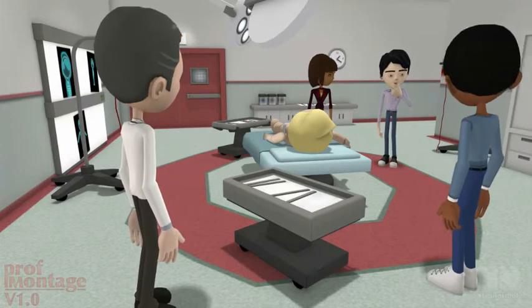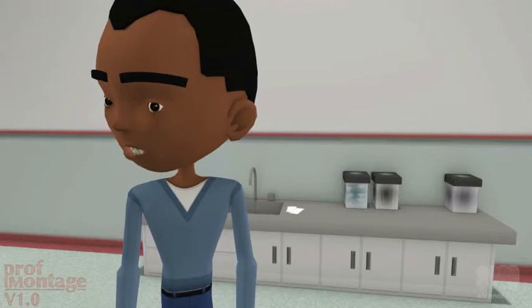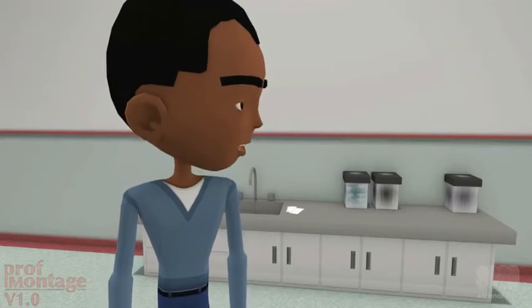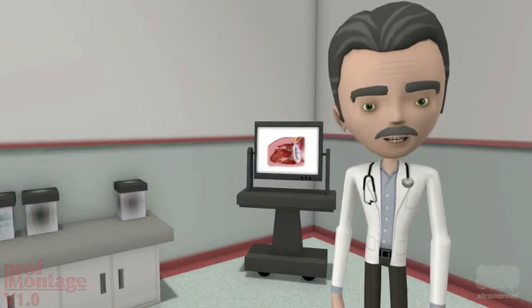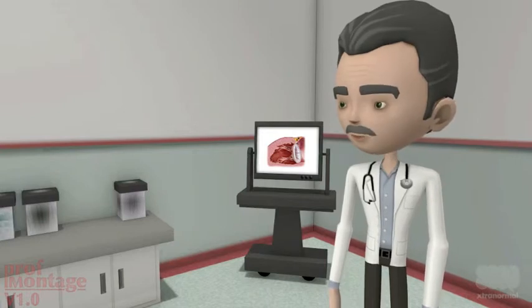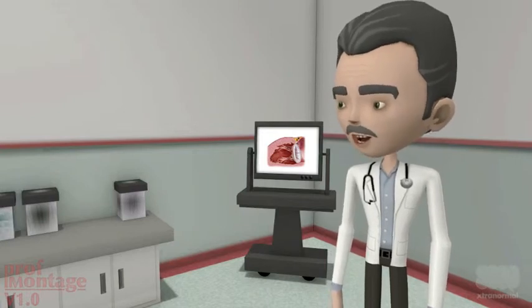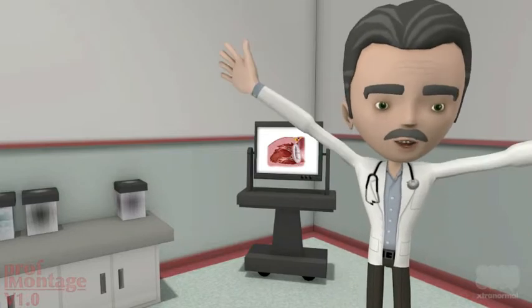So, how do I tell when regurgitation is severe? There's lots of different criteria around the echo, such as the width of the color-doppler jet or the regurgitant fraction. But most of these are prone to measurement error. I like to keep it simple by looking at left ventricular size. A large regurgitant volume returns to the LV on each beat, so the end-diastolic volume goes up.